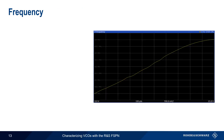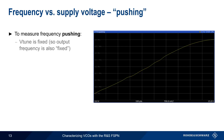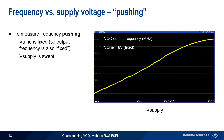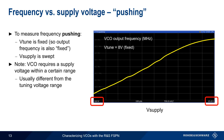In real VCOs, the output frequency is also somewhat dependent on the supply voltage — this is called frequency pushing. We measure frequency pushing by first setting V-tune to a fixed value to fix the VCO output frequency. In this example, we set V-tune to 8 volts. We then sweep the supply voltage, V-supply, over a given range and measure output frequency as a function of supply voltage. Keep in mind that VCOs require a certain supply voltage range — too little and the VCO won't output a signal; too much and it may be damaged. Here we vary V-supply between 8 and 15 volts.